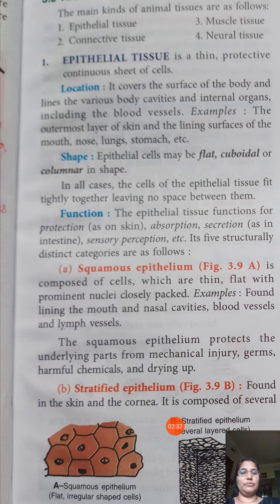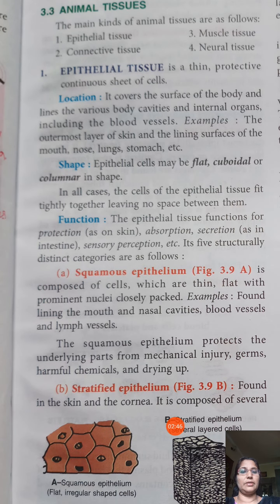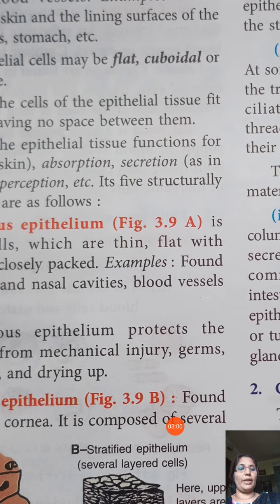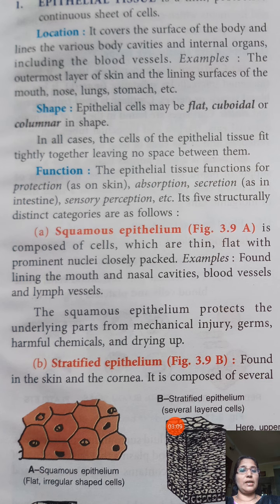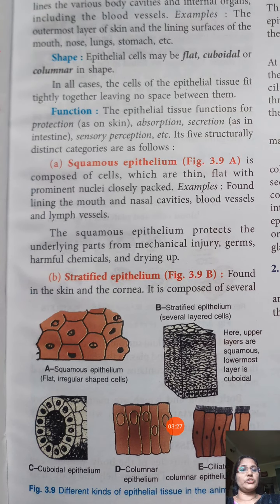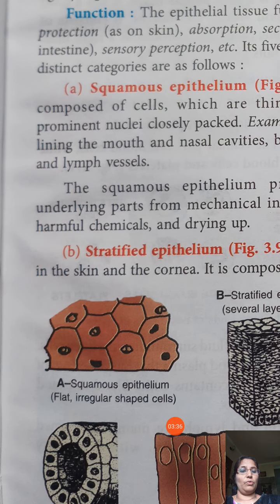The first category of epithelial cells is squamous epithelium — flat and thin shaped. Squamous epithelial cells are found in the lining of the mouth, nasal cavities, blood vessels, and lymph vessels. They are scale-like in shape, thin and flat, with a prominent nucleus. Their function is to protect the underlying parts from mechanical injury, entry of germs, chemicals, and to prevent evaporation of water.